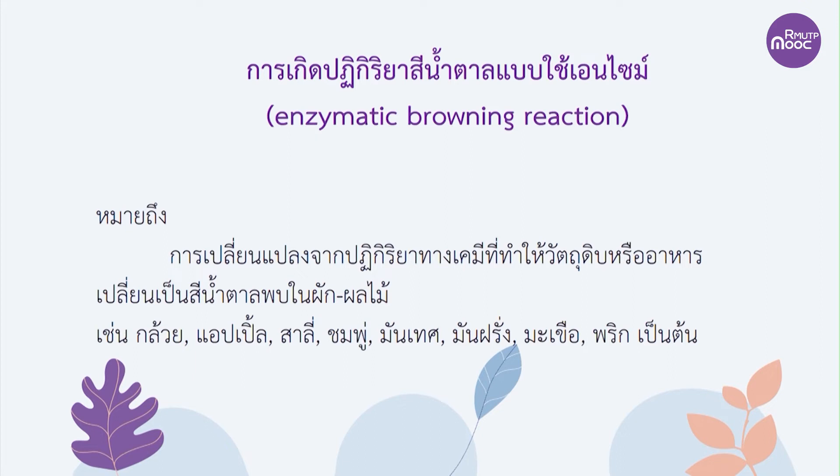แบบแรกก็คือ Enzymatic Browning Reaction ตัวนี้คือการเกิดปฏิกิริยาสีน้ำตาลแบบมี Enzyme มาเกี่ยวข้อง จำง่ายๆก็จะเป็นกลุ่มของวัตถุดิบหรืออาหารที่มักเป็นพวกผักผลไม้ โดย Oxygen จะมีผลเข้ามาเกี่ยวข้องในกระบวนการนี้ด้วย